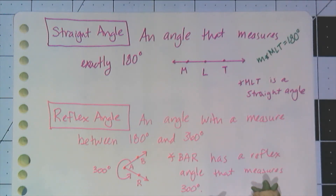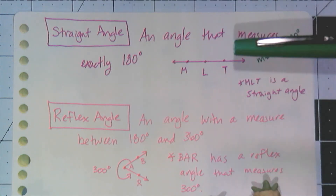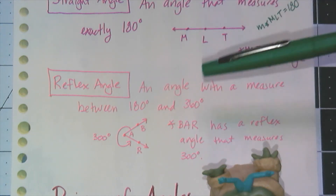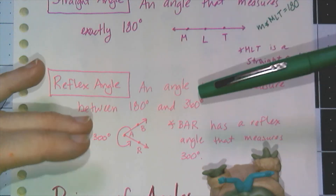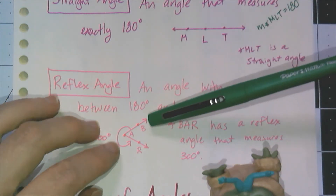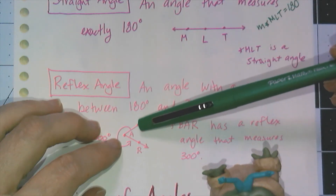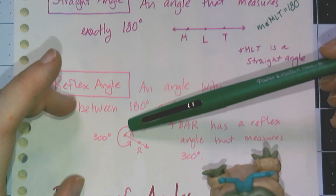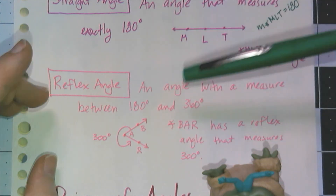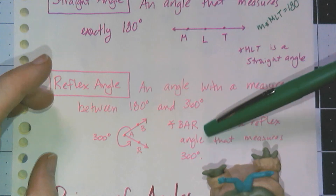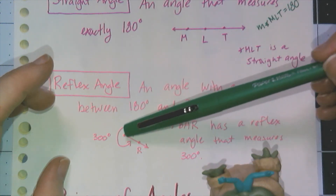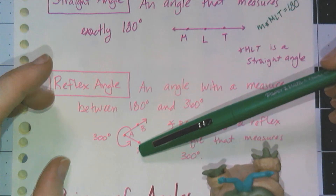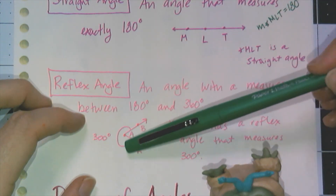Then we get to one that's most likely new: the reflex angle. This is an angle with a measure between 180 and 360 degrees. These angles come from the leftovers of an angle — in angles one, we said we measure an angle by the shortest distance between the two rays. The reflex angle is the rest of it, what goes on the outside. So angle BAR has a reflex angle measuring 300 degrees — we talk about the small angle BAR having a reflex, or leftover, of 300 degrees.